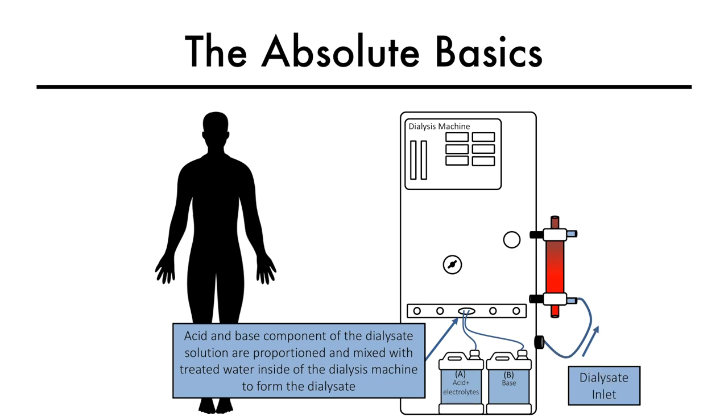Dialysate enters the dialyzer close to the venous end, at the opposite end of blood entry. The used dialysate, or the effluent, exits and is eventually discarded.